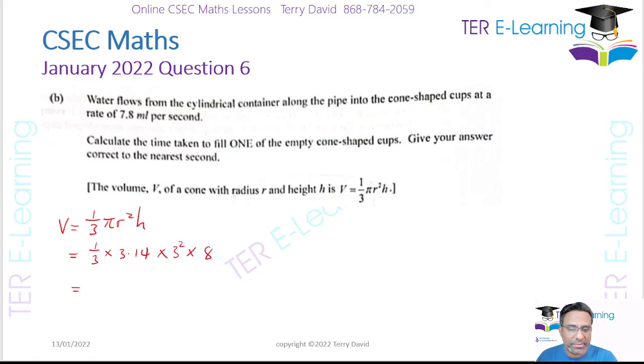Let me work that out. That is ⅓ multiplied by 3.14 multiplied by 9 multiplied by 8, and I'm getting 75.36. So this here is 75.36 cm³.